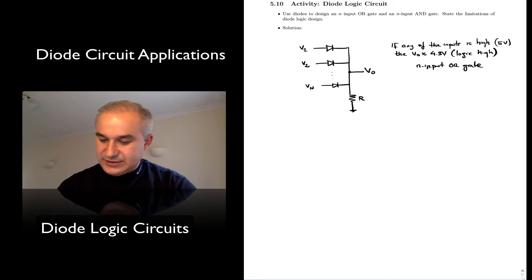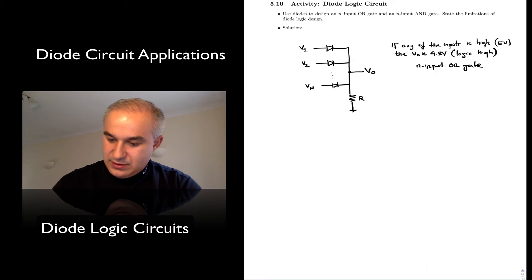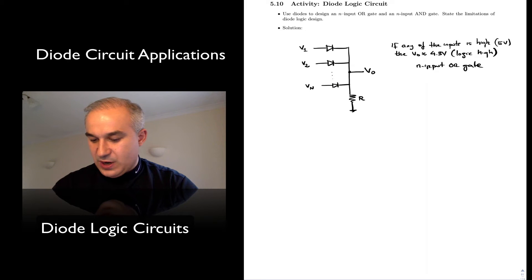Again, notice, consider for instance V1. If V1 is high, the diode conducts, and the voltage at the output is going to be V1 minus 0.7. And that will happen with any one of them. As long as you have Vn high, the output is going to be Vn minus 0.7. So you get a logic high.